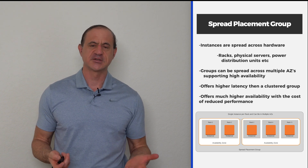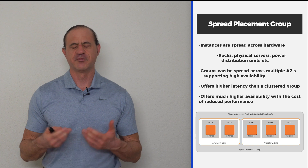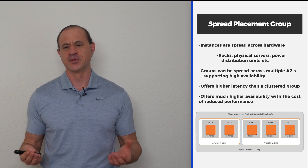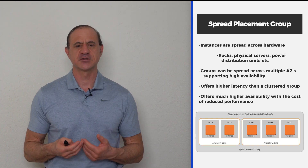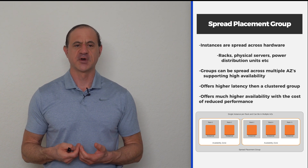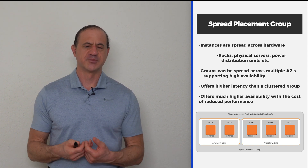You can see in this diagram we've set up a spread placement group across racks and across availability zones, which puts you in a position of much better availability. In summary: a cluster placement group is basically in the same rack in a data center; a spread placement group is across racks in the data center; and a partition placement group can be taken between availability zones, otherwise known as data centers. So now you understand all about cluster placement groups.